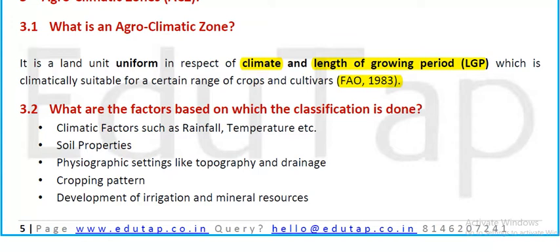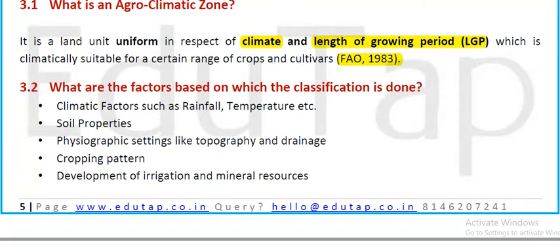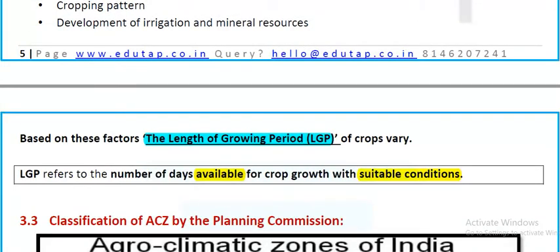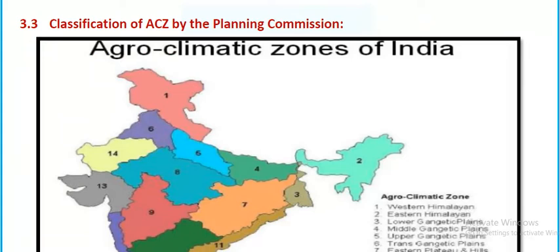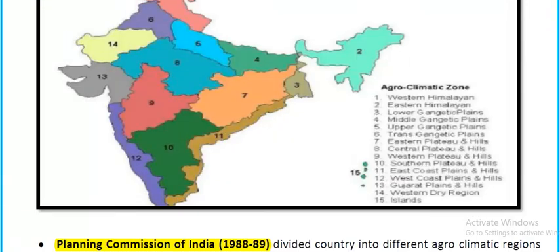The factors on which agro-climatic zone classification is based include climatic factors such as rainfall and temperature, soil properties, physiographic settings like topography and drainage, cropping patterns, development of irrigation, and mineral resources. Based on these factors, the length of growing period (LGP) varies. LGP refers to the number of days available for crop growth with suitable conditions in a year. The Planning Commission classified 15 agro-climatic zones.